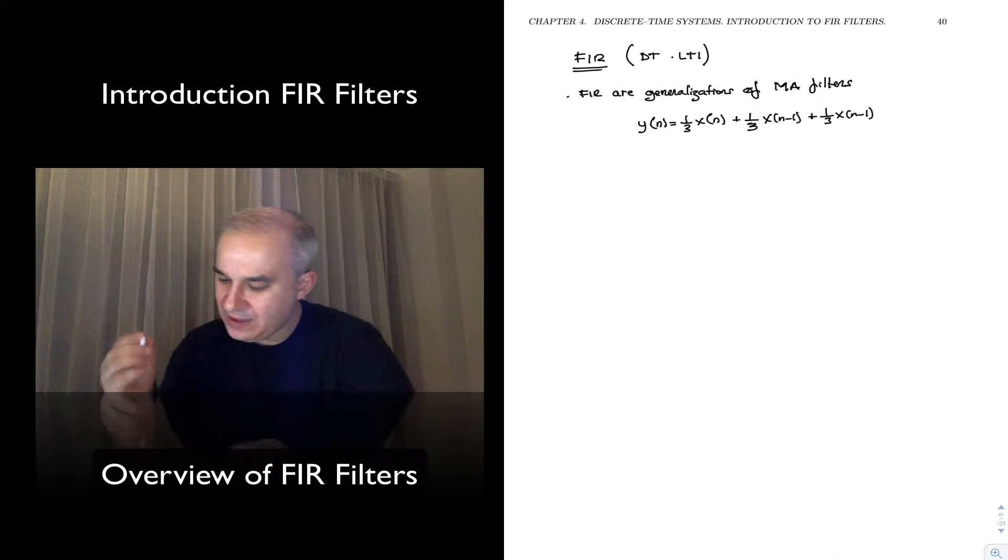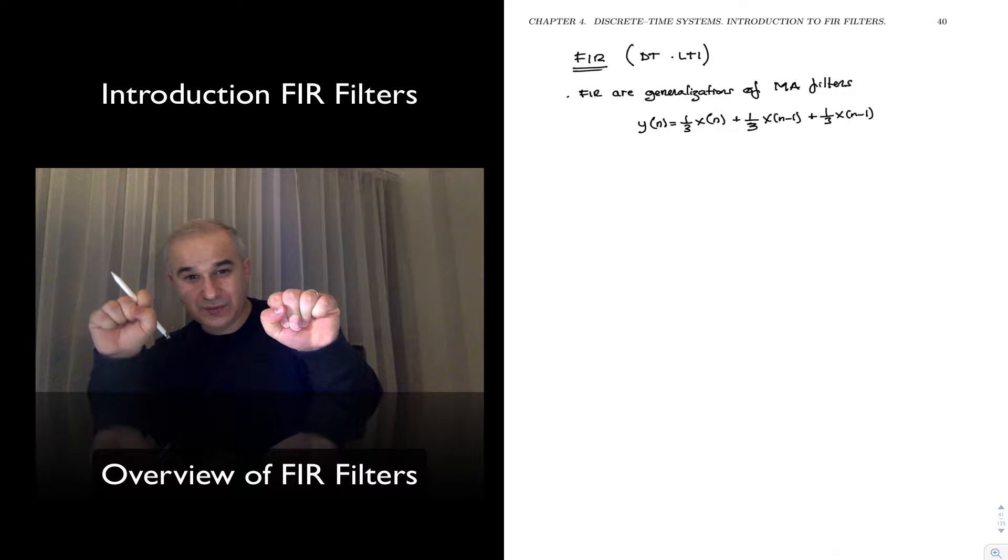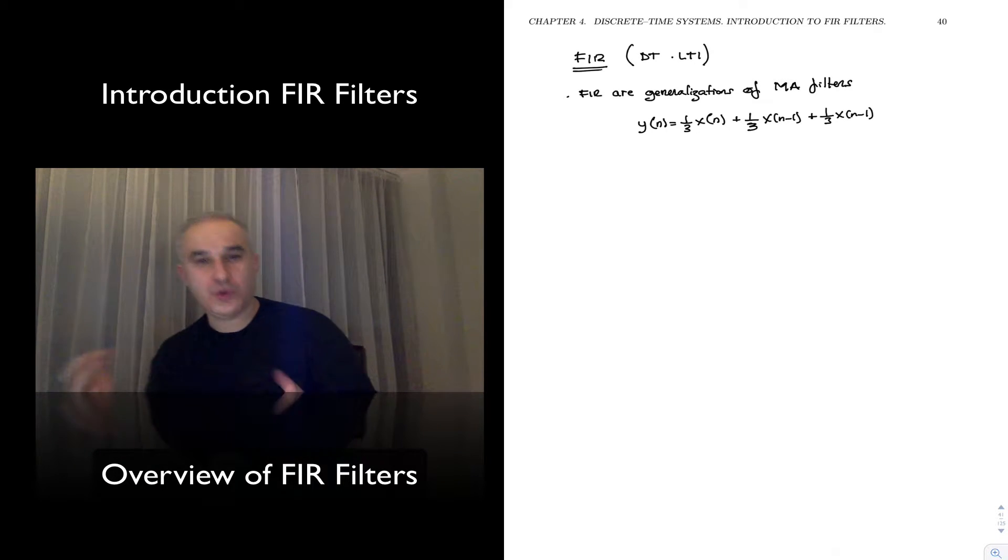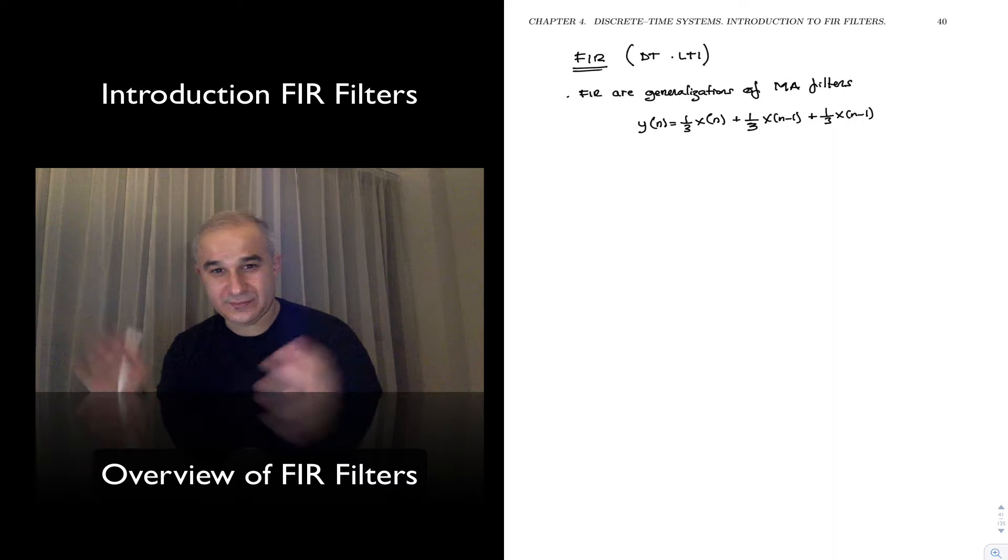Now, even if you just add them together, if you just pick the current input plus the previous input plus the previous input, you will be implementing a smoother, really a low-pass filter.